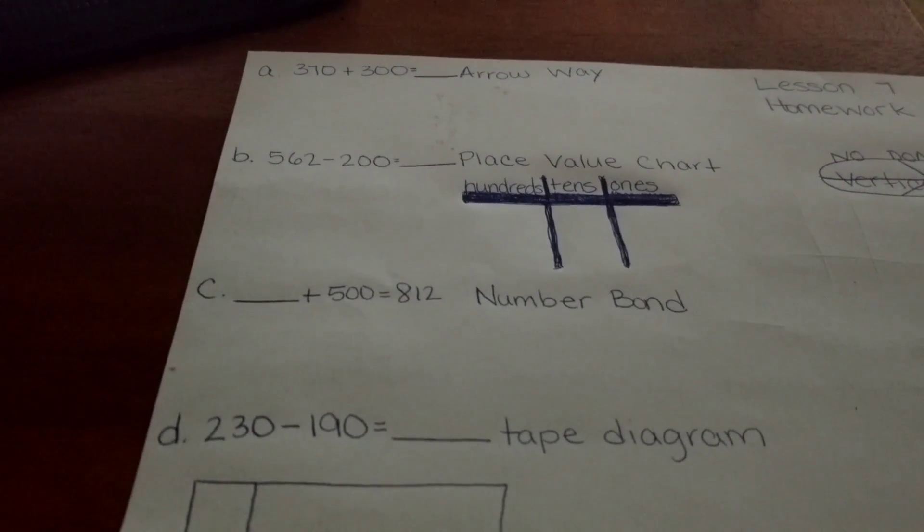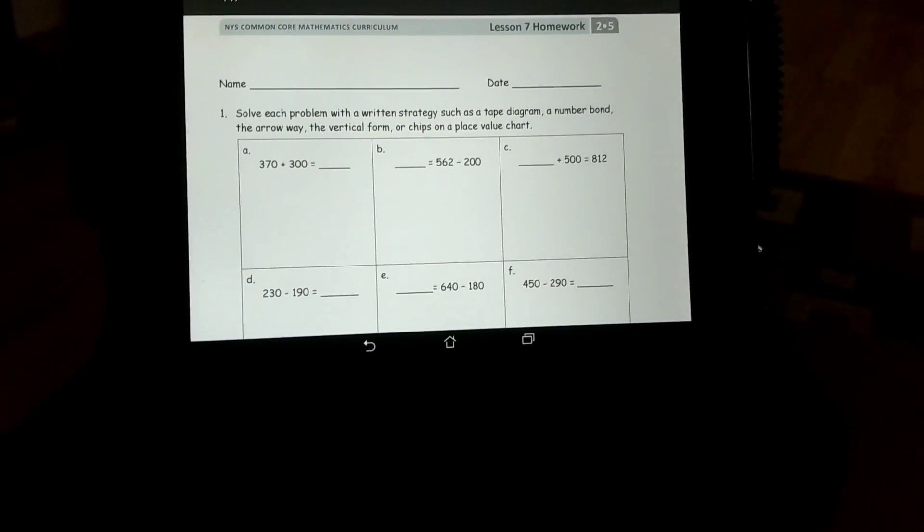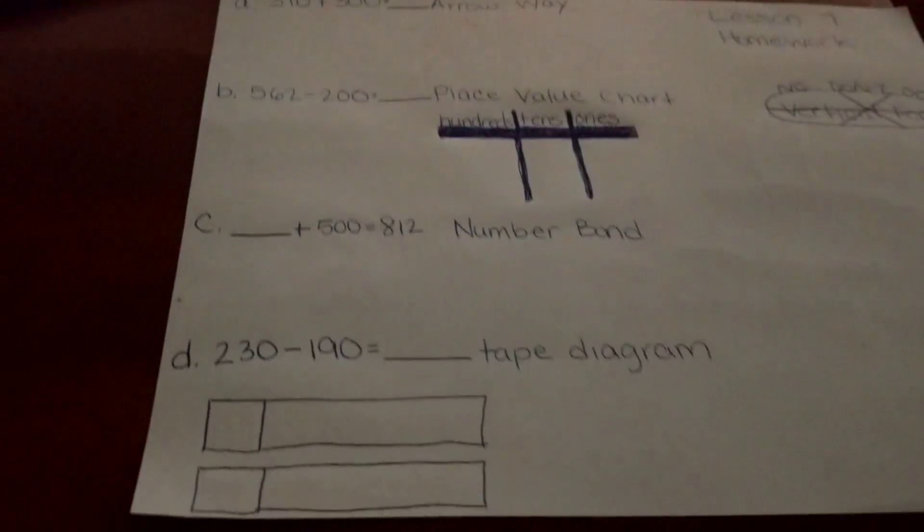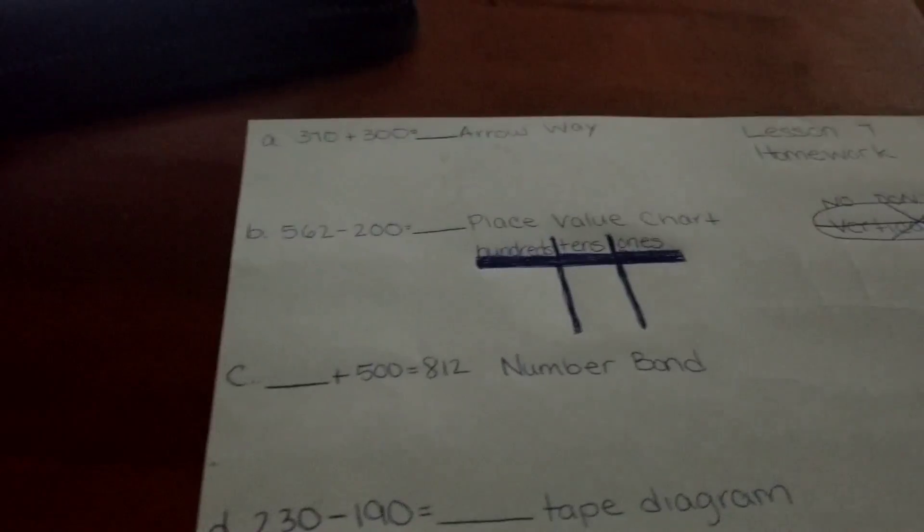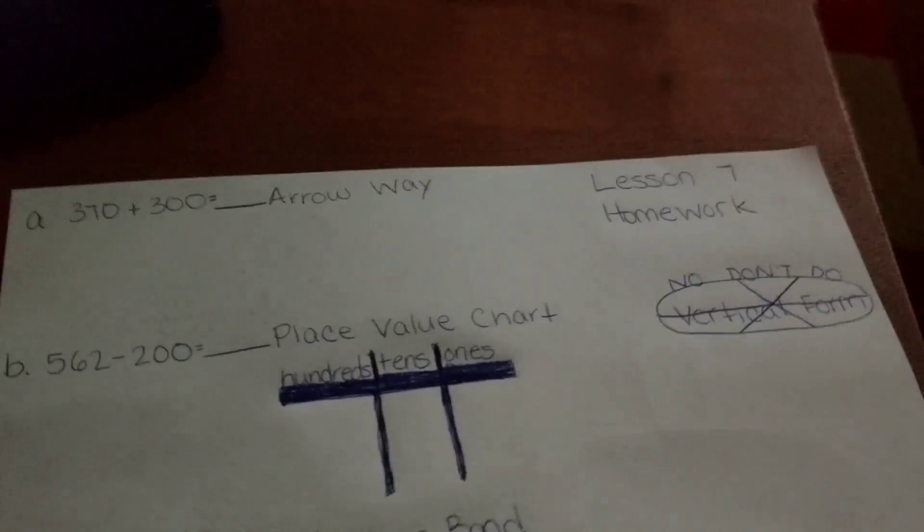Arrow way, place value chart, number bonds, and tape diagram. This is lesson 7's homework, and I took the first four problems to show the students and the parents how to do these methods.